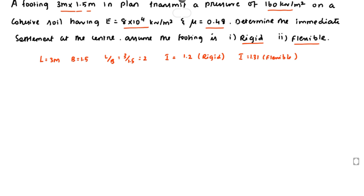The given values are: Es = 8×10⁴ N/m², µ = 0.48, and q = 160 kN/m². For case one, the footing is rigid, so we use the formula for immediate settlement: Sᵢ = q × B × (1 − µ²) / (E × I).